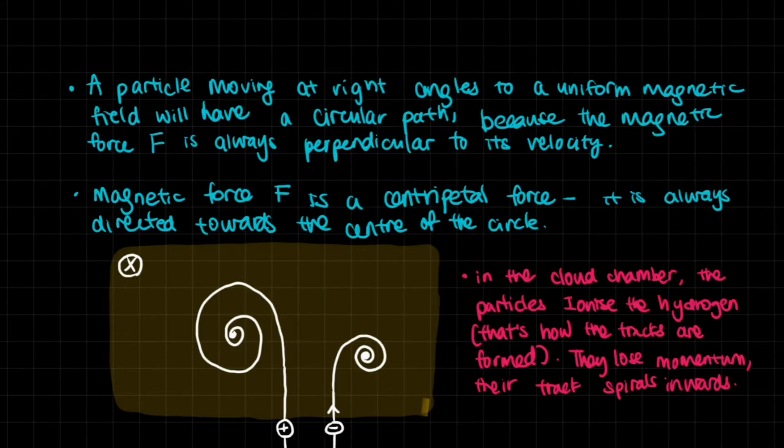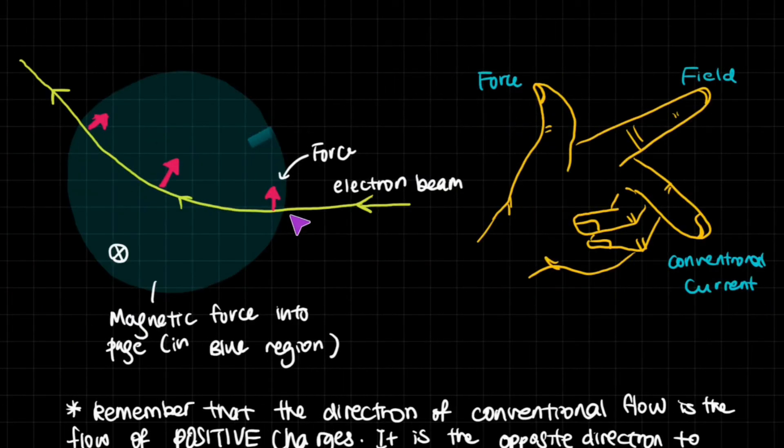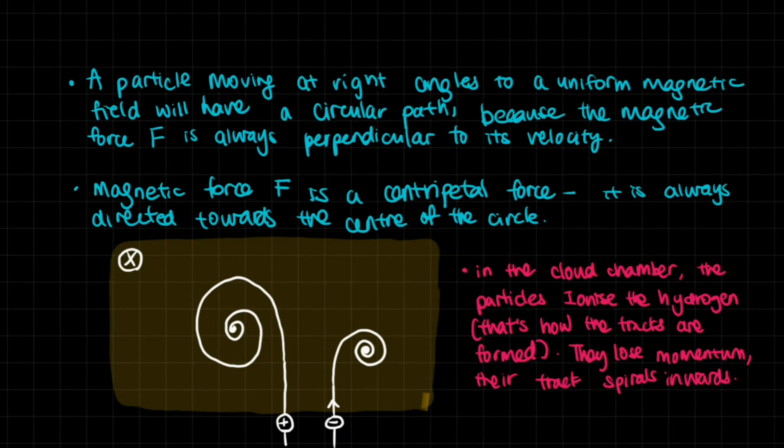Now picture a particle moving at right angles to a uniform magnetic field. It will always have a circular path because the magnetic force F is always perpendicular to its velocity. Look at the diagram we had before. If I expanded this blue circle to fill the whole page, then the force that's 90 degrees to the path will continue, and the electron beam will travel in a circle. Each time you do Fleming's left-hand rule, the force exerted on the electron is 90 degrees towards a certain point. This is centripetal force. The magnetic force F is actually a centripetal force, always directed towards the center of the circle.